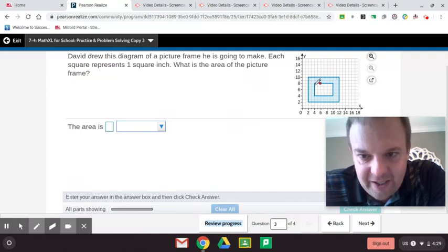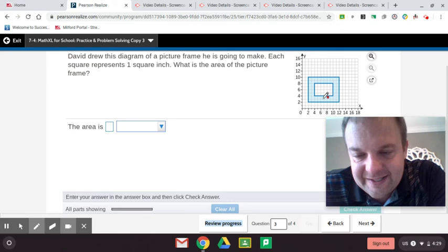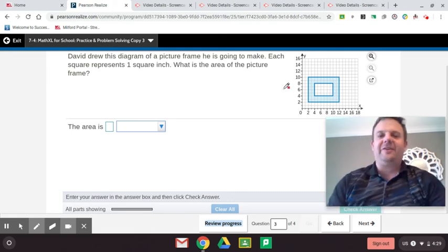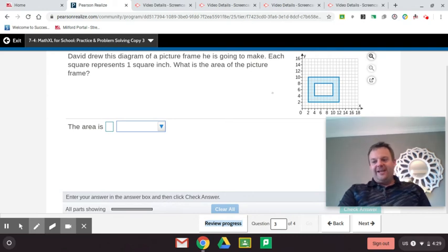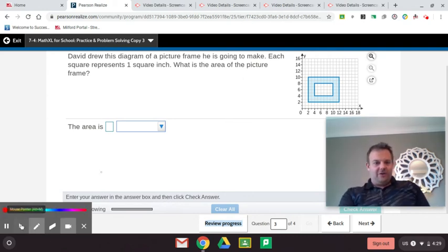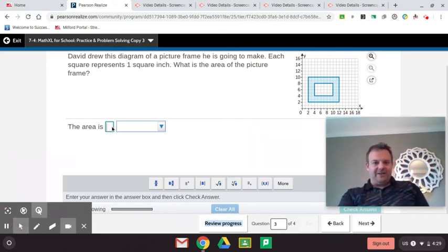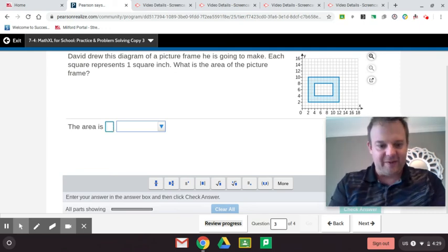This rectangle here is four by what? Let's see. One, two, three, four, five, six. Six by four is 24. So now we have to do 80 minus 24. So we do 80 minus 24 to get the area. We basically subtract out the negative space there. That's a good way to do it. And we get 56.